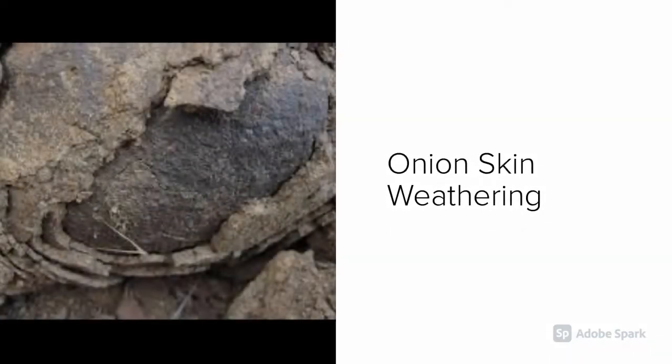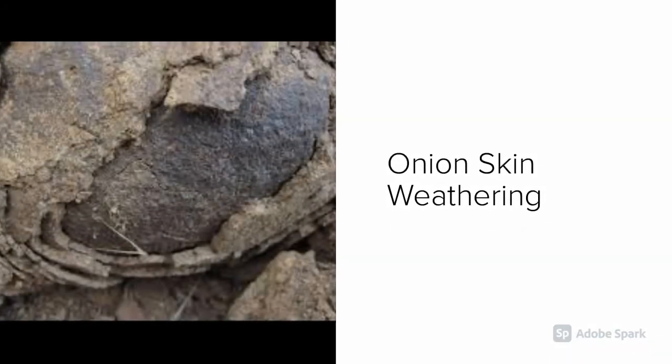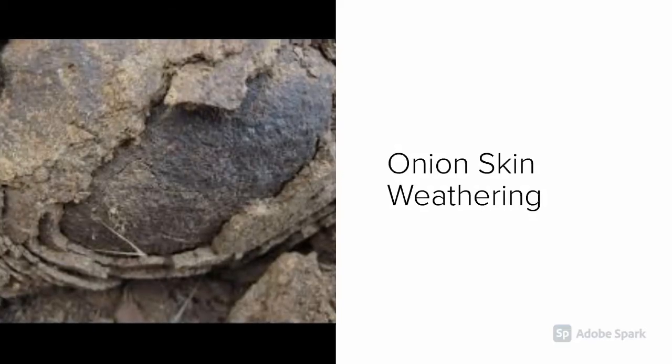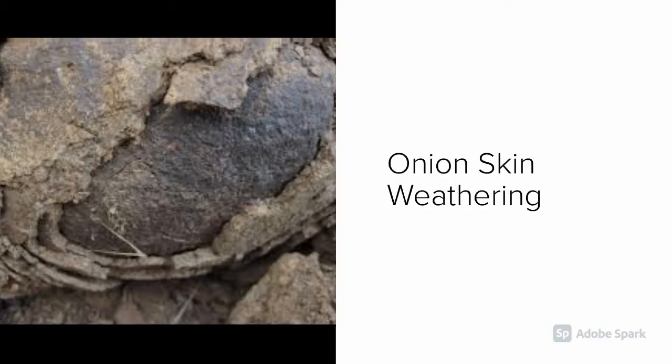The next type of weathering is onion skin weathering. This is caused by the heating and cooling of rocks, often found in the desert.